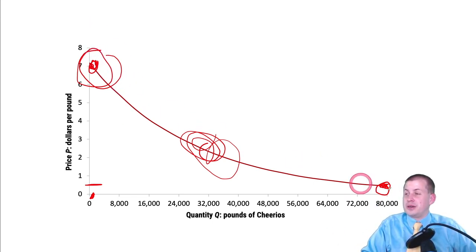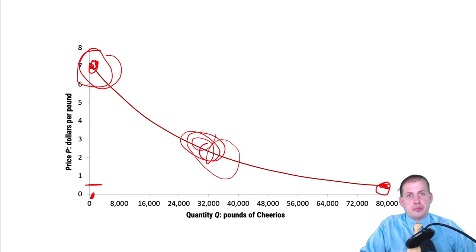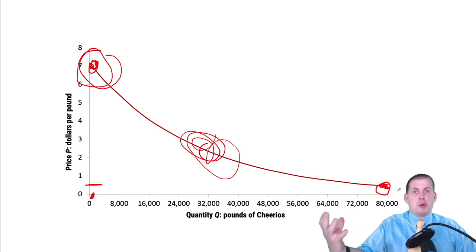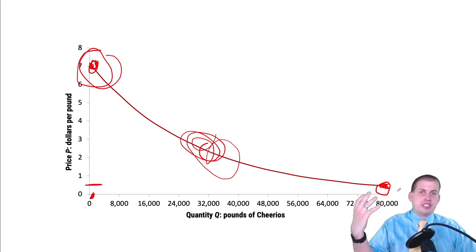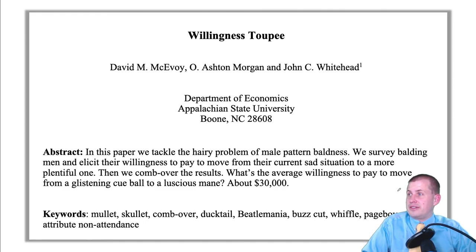That's where demand curves come from — actual surveys where people ask how willing consumers are to pay some amount of money for Cheerios, and they count up how many people would do that. This is what happens in real life.